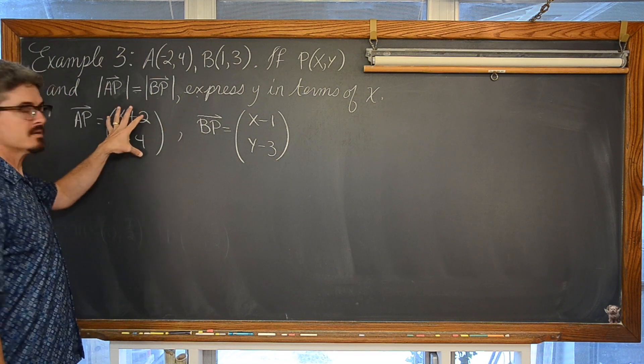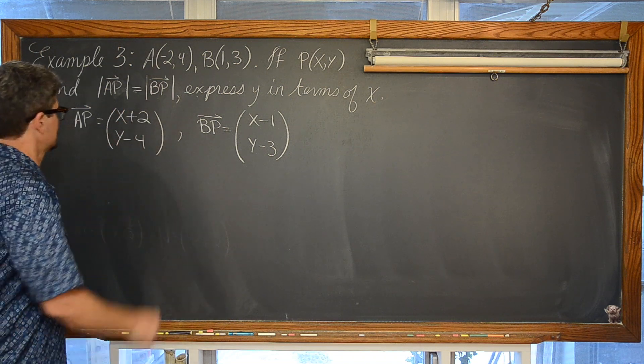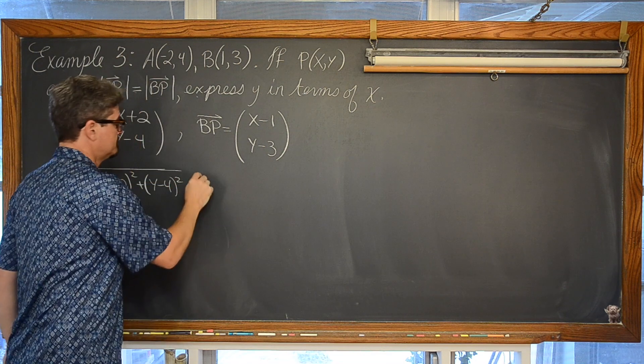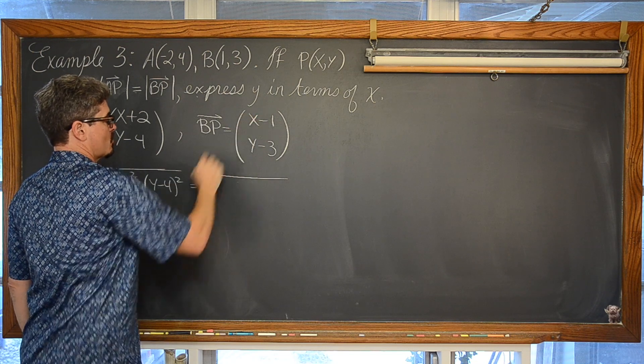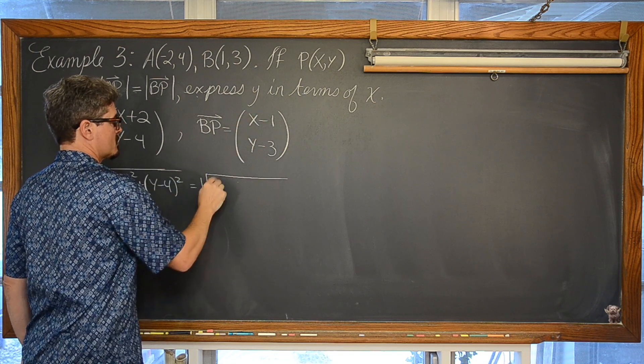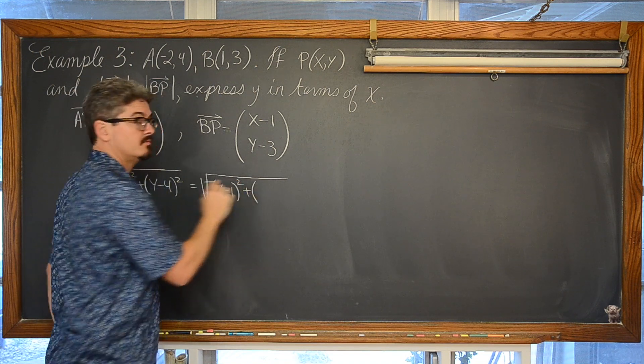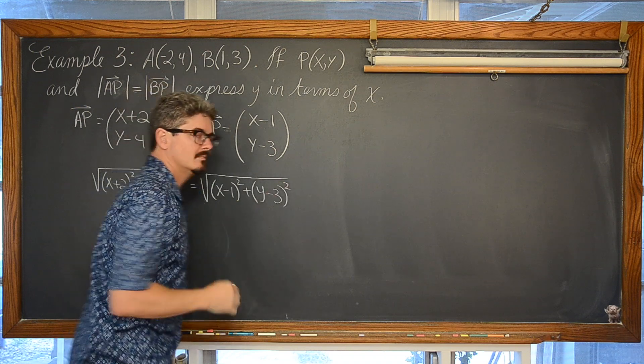And these magnitudes have to be equal. So the magnitude of AP, the square root of v1 squared plus v2 squared. That has to be equal to the magnitude of BP. The square root of v1 squared plus v2 squared. Excellent.